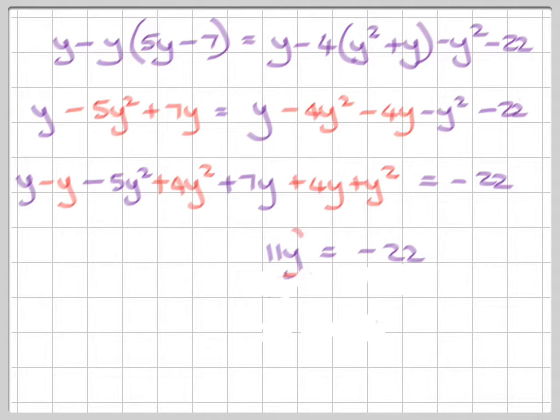Now we need to isolate the y by dividing by 11. So we divide by 11 on this side. Do the same to the other side. We end up with y = -2. Don't forget our minus sign because there's a plus there. Minus and a plus equals a minus. So 11 went into 22 minus 2 times.